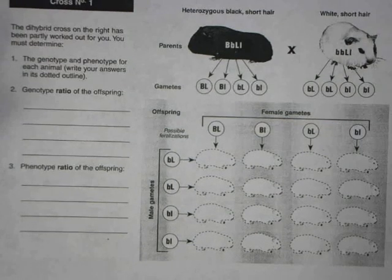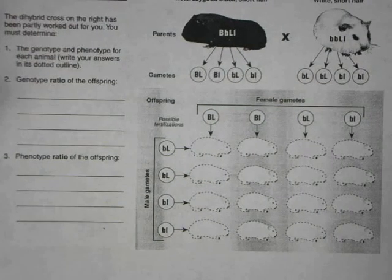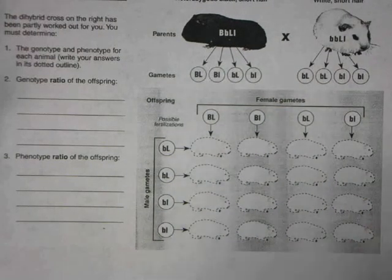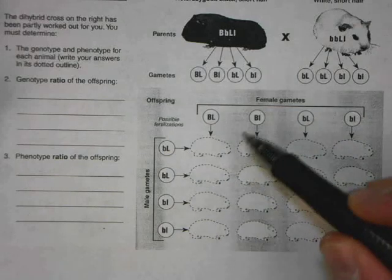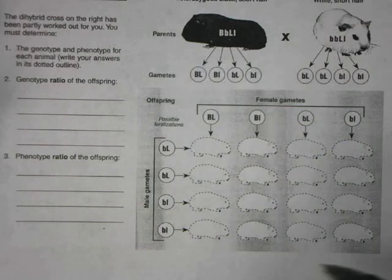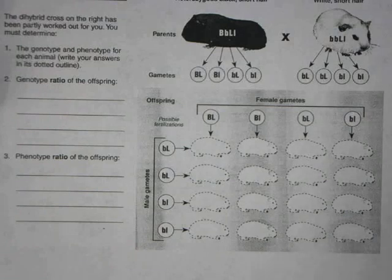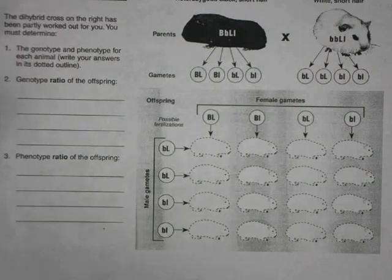Moving down to our cross, the gametes have already been written in. Just like a normal 4×4 Punnett square — we've expanded that to 16 boxes. We just fill in the boxes, just like what we've done for the original monohybrid crosses.